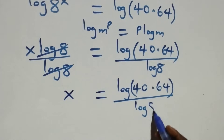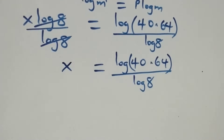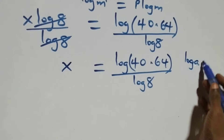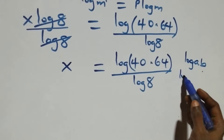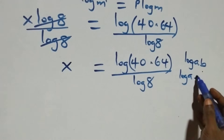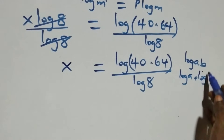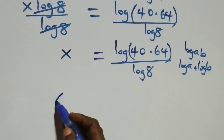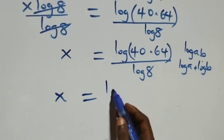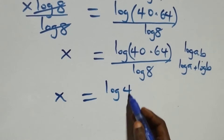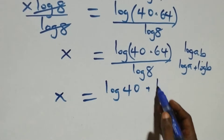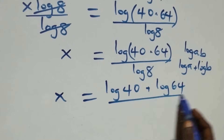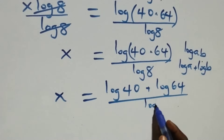Now we apply the logarithm product rule: log of a times b equals log a plus log b. So x equals log 40 plus log 64, all over log 8.